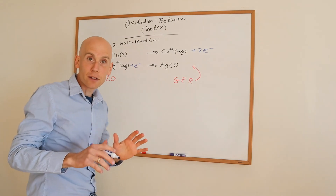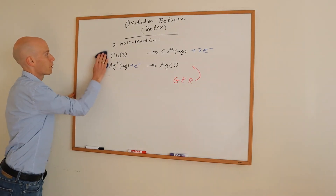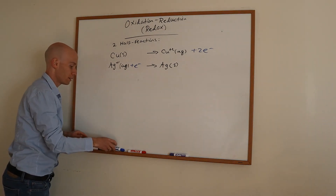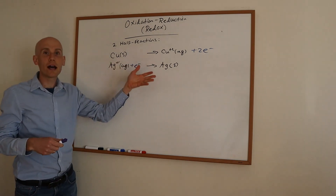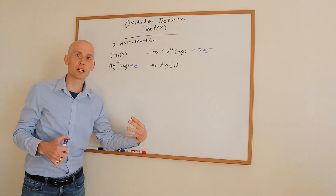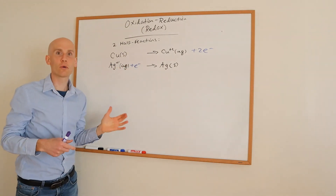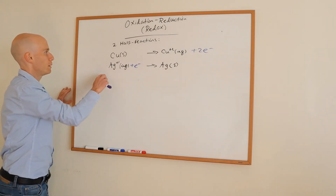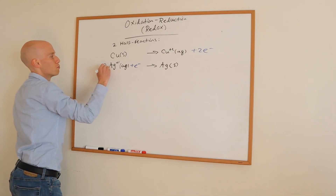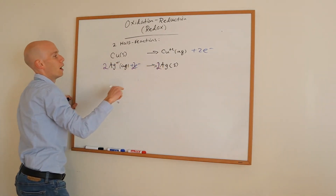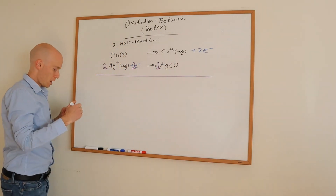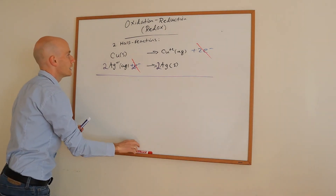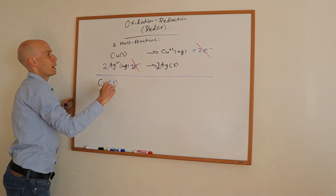To complete the balance, I can add the half reactions together — but before I do, the electrons are for bookkeeping only and can't appear in the final net reaction. So I need to multiply the silver half reaction through by two, giving me two electrons, two silvers. Now both half reactions have two electrons, and when I add them, the electrons on the left cancel those on the right — just like a mathematical equation — giving me the full net reaction.